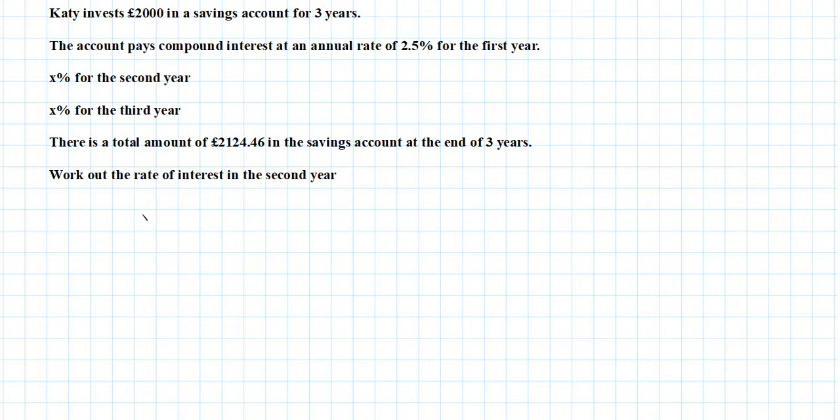So what I mean by that is for year one, at the end of year one, the calculation would be £2000 as your principal times 1 plus 2.5%, so I'll do 2.5 over 100.